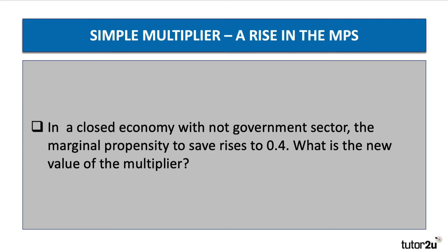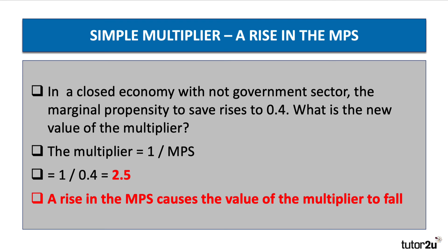What happens if we increase the marginal propensity to save to 0.4? The multiplier is one divided by the MPS — it's now one divided by 0.4, which equals 2.5. So an increase in the marginal propensity to save causes the value of the multiplier to go down. An increase in the rate of leakage and withdrawal from the circular flow causes the value of the multiplier to go down.